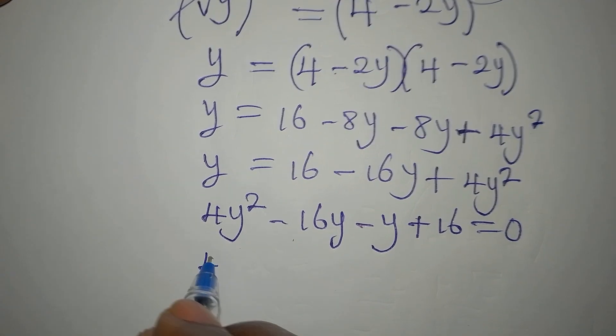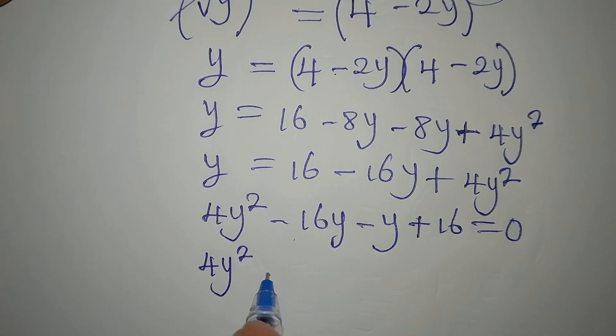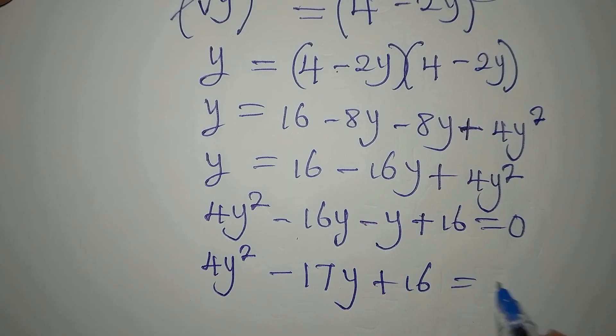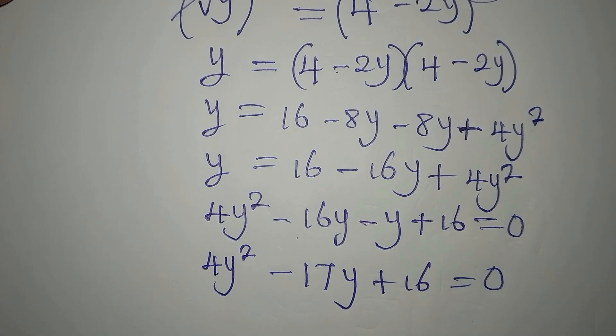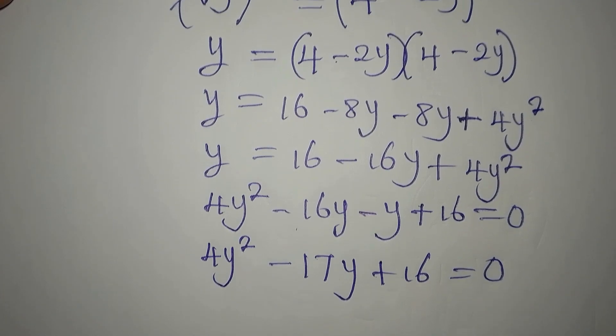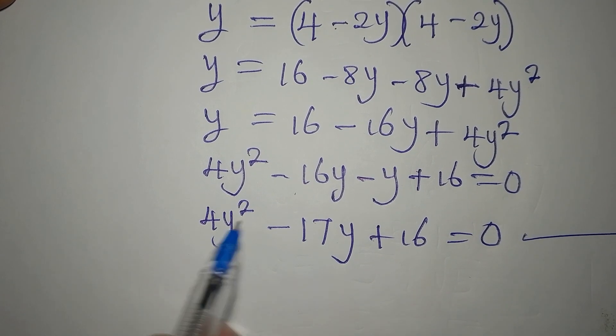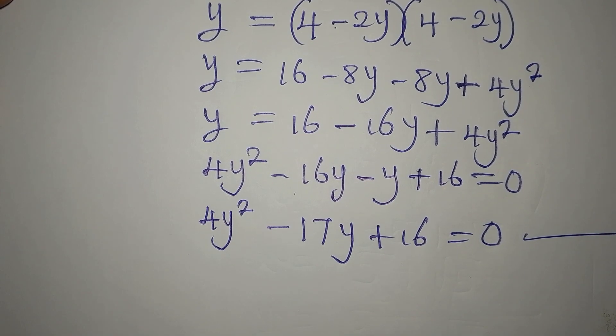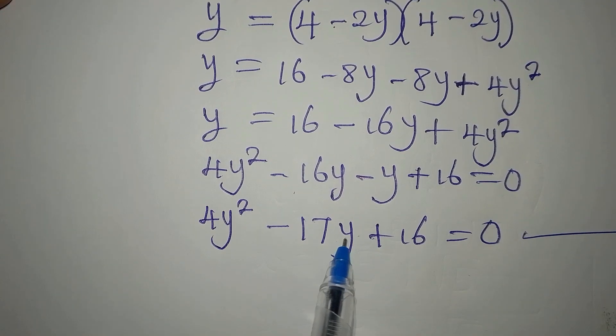Now we have our 4y squared minus 17y plus 16 equals 0. So what should we do? Solve the problem. This is now a quadratic equation because of the square here and the equal sign and also the variable here y.